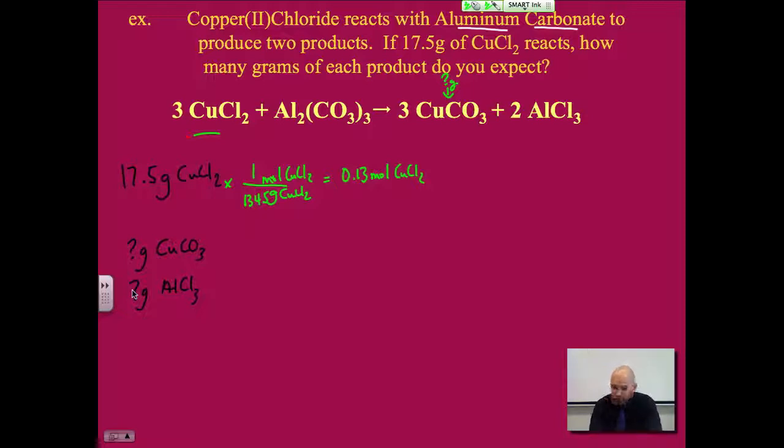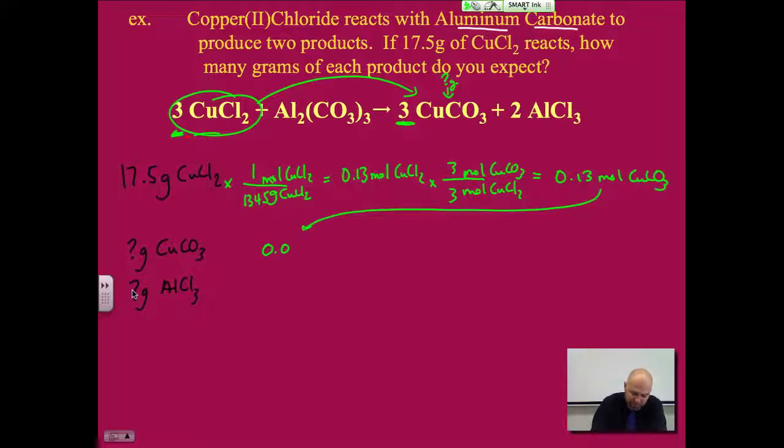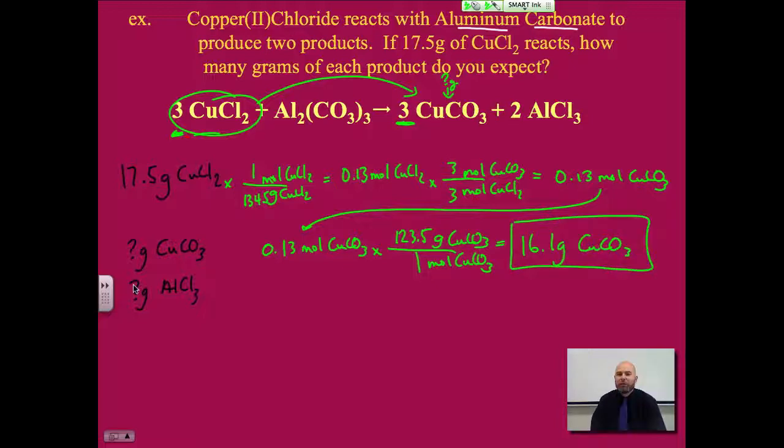I want to convert that to the CuCO3. X, line, moles CuCl2, moles CuCO3. Here's where we use our coefficients. 3 and 3. 0.13 moles of CuCO3. I'll bring it down here. 0.13 moles of CuCO3. CuCO3, I look it up. It is 123.5. So when I multiply, I get 16.1 grams of the CuCO3. So that's how much of that product I'm going to get.